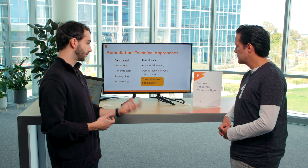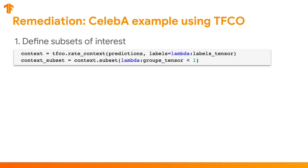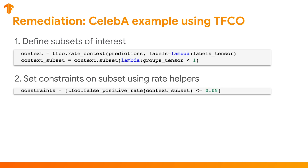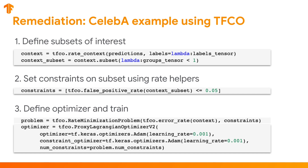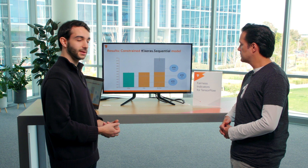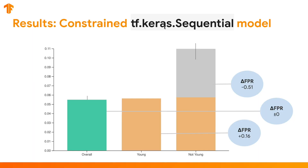We are going to apply constrained optimization on this model. To do this, we first define the context — we tell it that we're looking at smiling, not smiling, and we tell it what slice we're interested in: young, not young. Next, we ask the model to keep the false positive rate for each slice under 5%. And finally, we define the optimizer that has this constraint defined. We train the model and re-evaluate. As we can see, the false positive rate for the overall is about the same, but on the not young slice, the false positive rate has decreased by about 5%, which is really big. It's worth noting that on the young slice the false positive rate has increased a little bit, but that's a worthwhile trade-off.